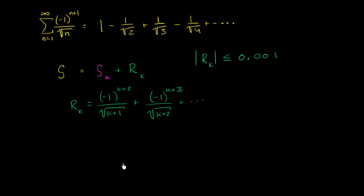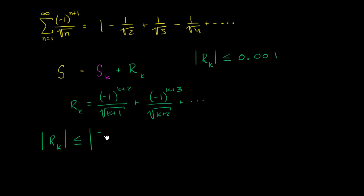What we've seen — and we'll get a conceptual verification at the end of this video — is that the absolute value of this entire sum, this entire remainder r sub k, is going to be less than or equal to the absolute value of the first term. Some people refer to this as the alternating series remainder property. The absolute value of the remainder is less than or equal to the absolute value of negative one to the k plus two, over the square root of k plus one. And we want that to be less than or equal to 0.001.